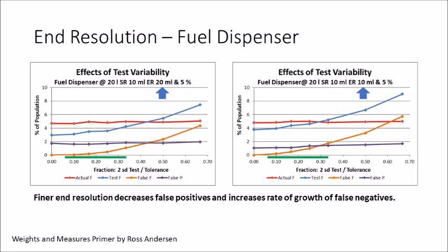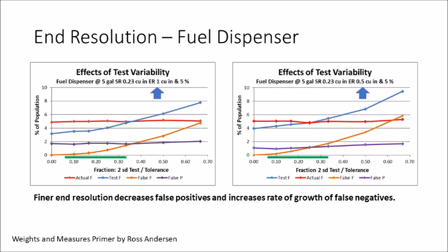Now we look at end resolution. For the 20-liter test of a motor fuel dispenser, the figure on the left uses 20-milliliter graduations on the prover and the right uses 10 milliliters. In 2010, Handbook 105.3 was changed to call for higher resolution on the neck — they went from a 4-inch neck to a 3-inch neck, reducing the division size by half. Comparing the two graphs, the false positives rise from about 1% to about 1.6%. The resolution also has a slight effect on the false negatives, lowering the orange line on the left-hand figure.